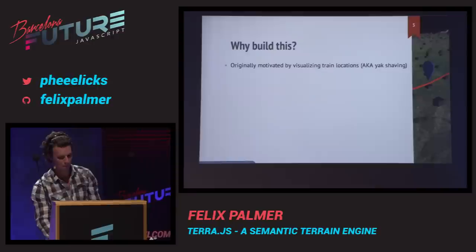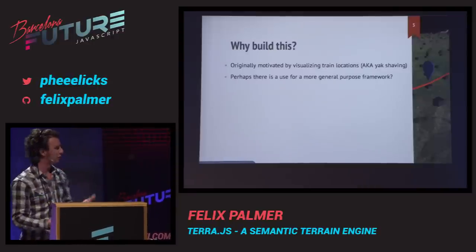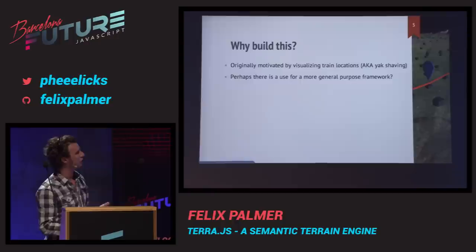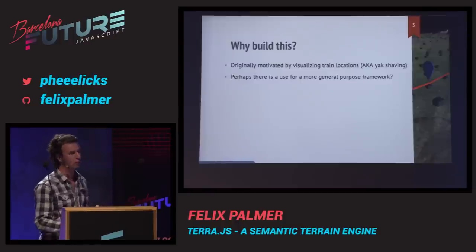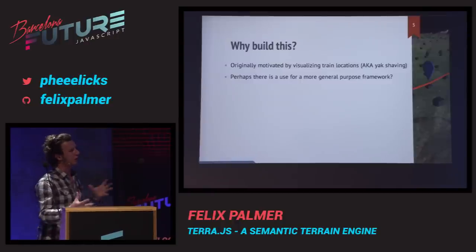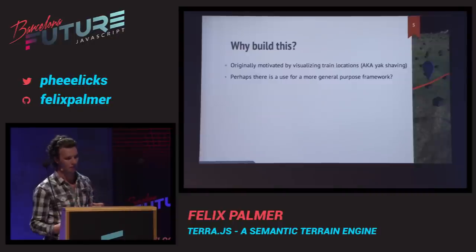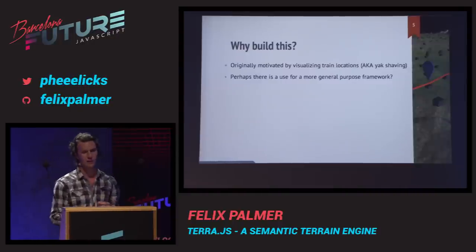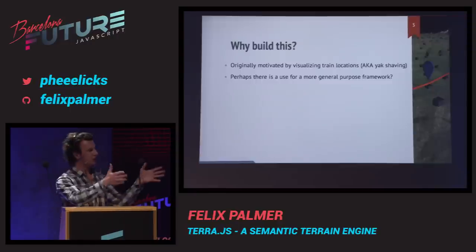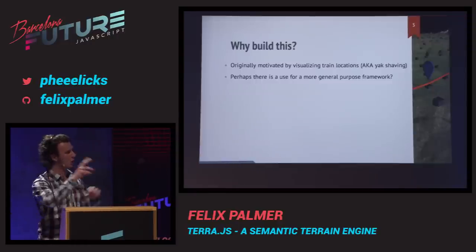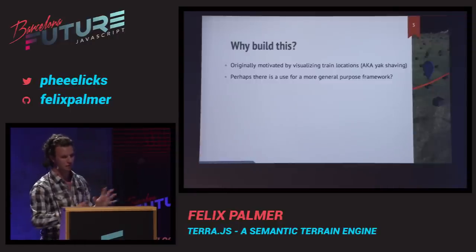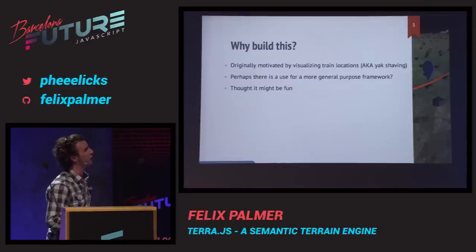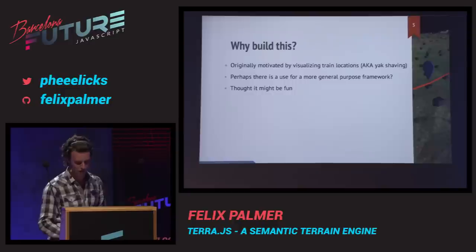So about two weeks later, long after the friend had left — having seen nothing of Prague because I was just coding this — I built this thing. This is the Czech Republic in 3D, and this was all before TerraJS existed. Each of these black blobs is a railway station, and it lets you do a real-time search of the various trains and their locations. Having built this, I thought, well, that didn't take me half an hour. Perhaps there's a niche for a more general purpose framework — imagine if you could just say: give me the Czech Republic, here are my stations, plop them on the map, just works.